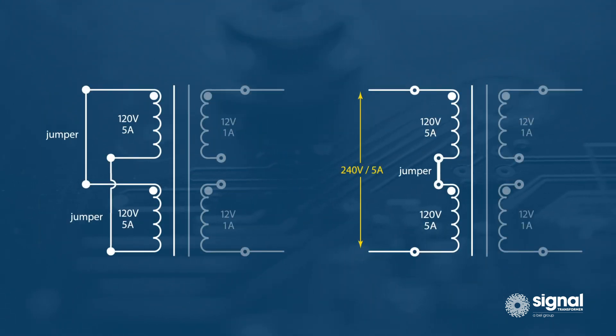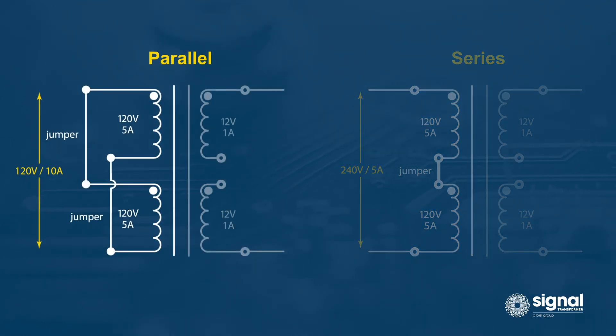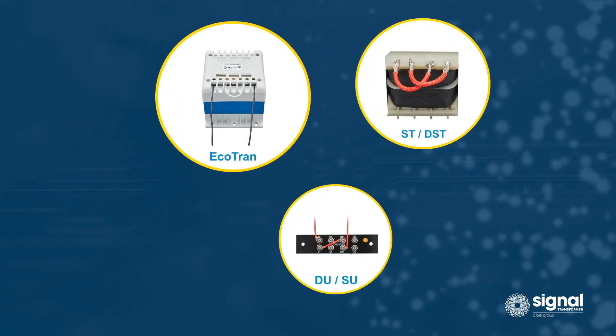These principles also apply to primary windings, meaning two 120-volt 5-amp primary windings can be wired in series for a 240-volt 5-amp input or in parallel for a 120-volt 10-amp input. Signal Transformer offers a wide range of transformers with multiple inputs and outputs.